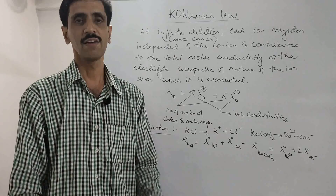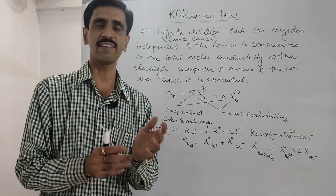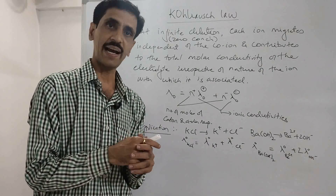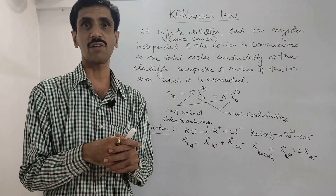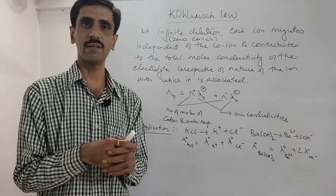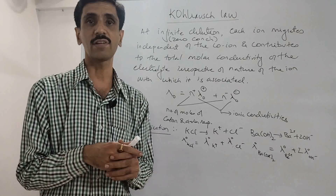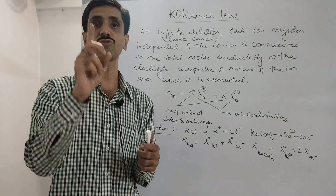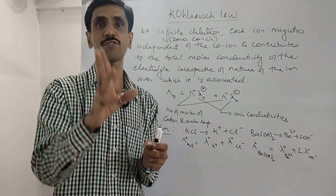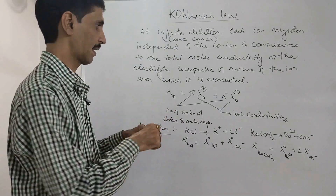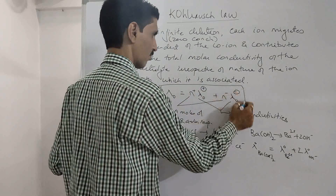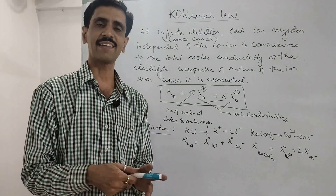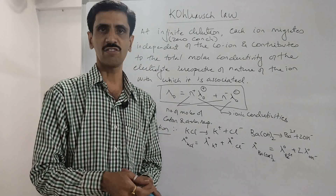To wrap up: in this session we discussed Kohlrausch's law, which states that at infinite dilution or zero concentration, the migration of each ion is independent and does not depend upon the nature of the co-ion with which it is associated. Each ion contributes to the total molar conductivity of the electrolyte. The mathematical expression was given, and two applications were shown with KCl and barium hydroxide.